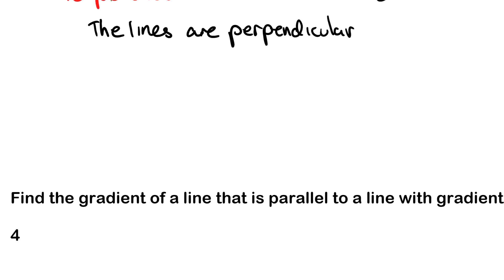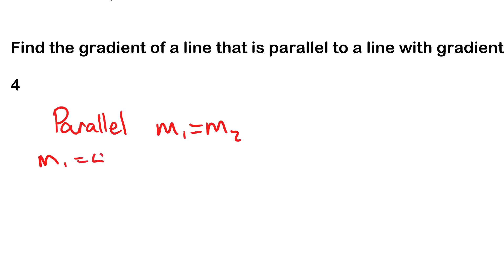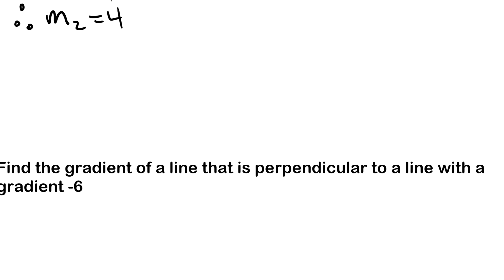Next question: find the gradient of a line that is parallel to a line with gradient four. Remember, parallel lines have the same gradient. So if m1 equals four, then m2 must also equal four. That's all there is for parallel — they're the exact same gradient.